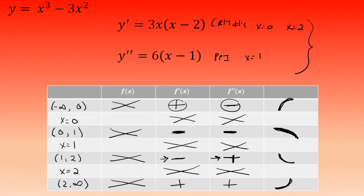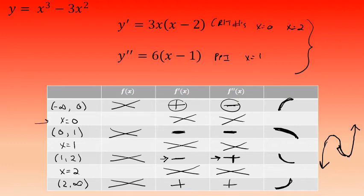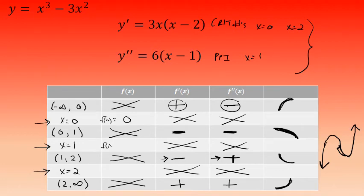From negative infinity to positive infinity, the curve is: increasing and concave down from negative infinity to 0; decreasing and concave down from 0 to 1; decreasing and concave up from 1 to 2; and increasing and concave up from 2 to infinity. To locate the shape on the coordinate plane, I'll evaluate the original function at the key x values: f of 0 equals 0, f of 1 equals negative 2, and f of 2 equals negative 4.